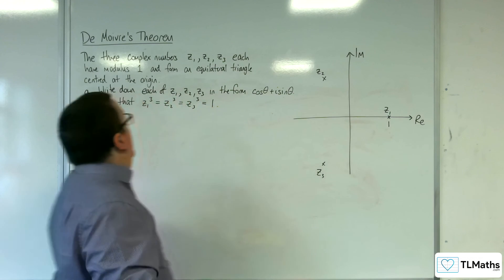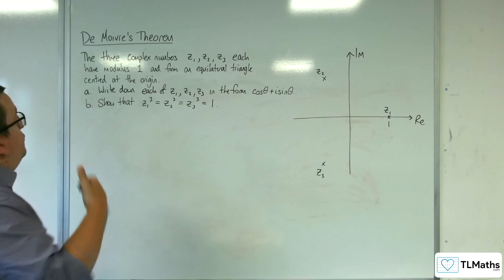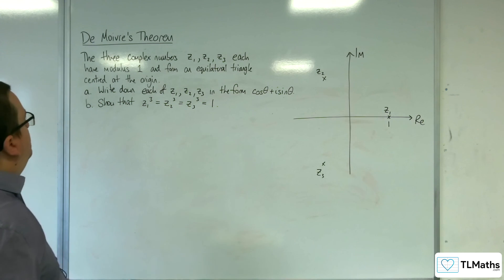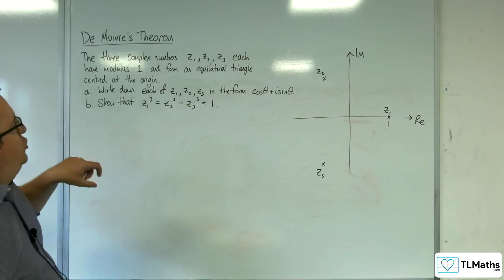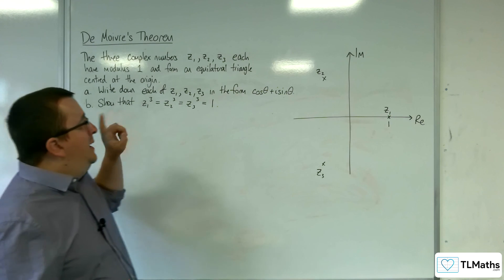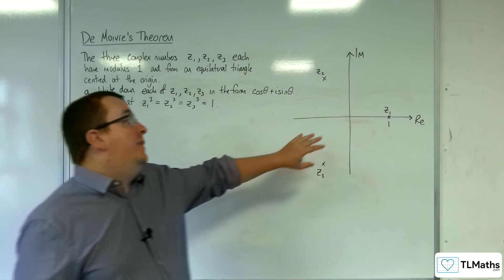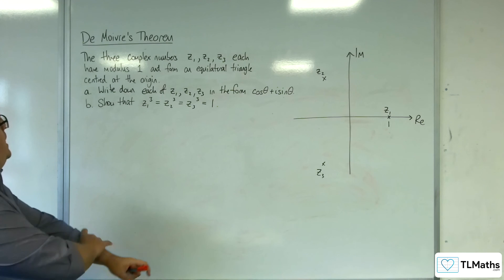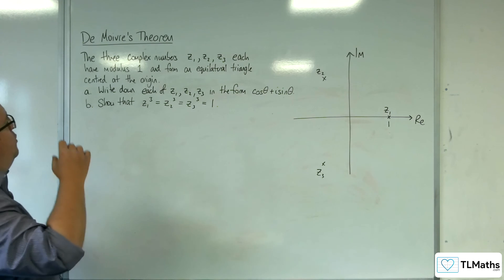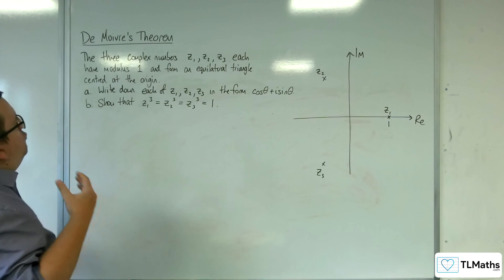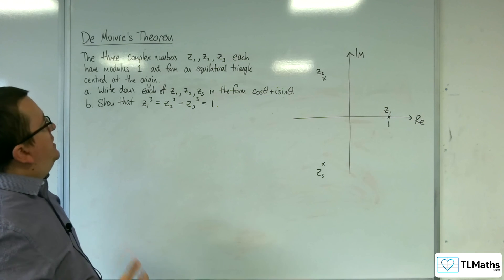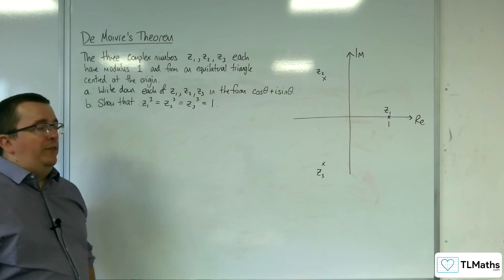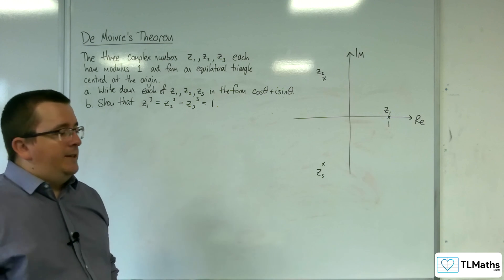In this problem, we have three complex numbers Z1, Z2, and Z3, each having modulus 1 and forming an equilateral triangle. So here they are on an Argand diagram. Part A: write down each of Z1, Z2, Z3 in the form cosine theta plus i sine theta.